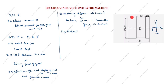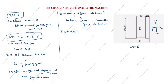Now we will see how to write the program as per this drawing. First we write G75 R — we take the return amount as 1. What is return amount? The tool comes 1 mm down, then goes back up — that is the return amount. It repeatedly comes down 1 mm and goes up before the next pass.